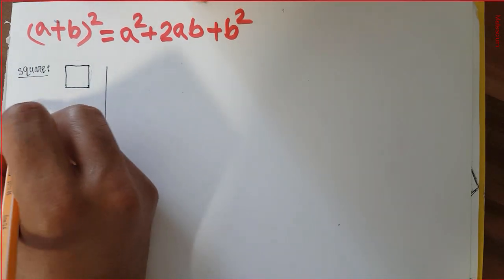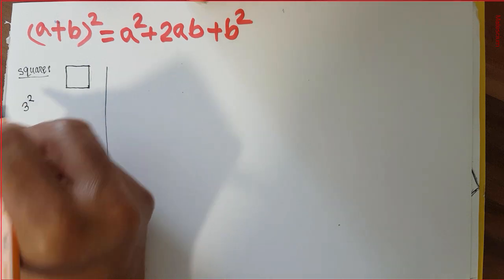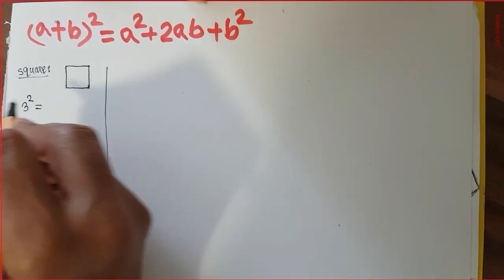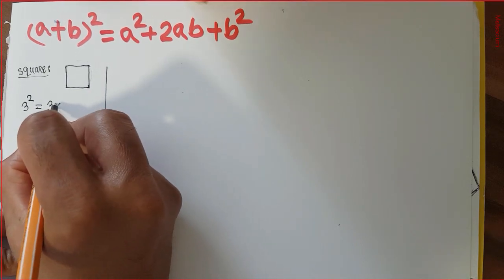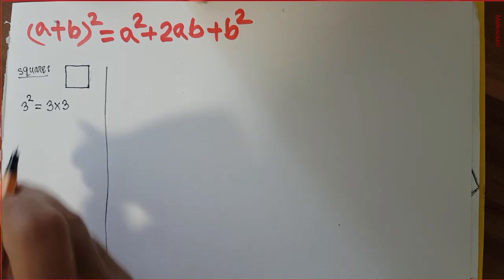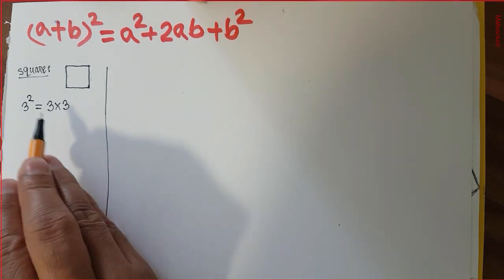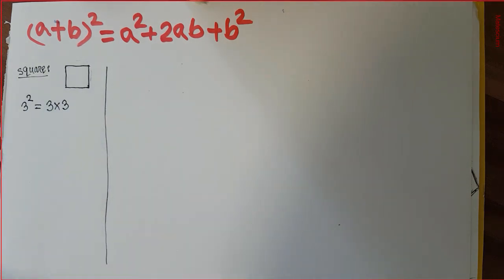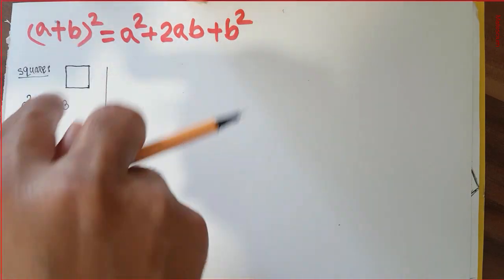So if we consider the square of a numerical number, what does it mean? Let us consider three squared. What is the physical meaning of three squared? It means three will be multiplied by itself two times — that means one three multiplied by another three — which is called three squared.